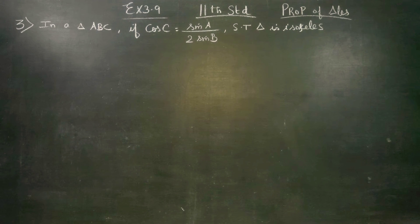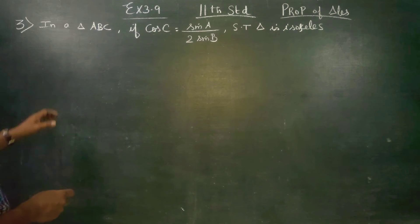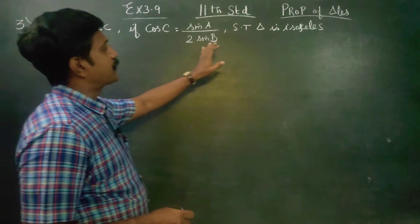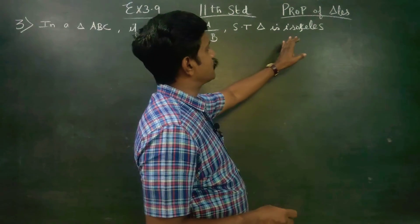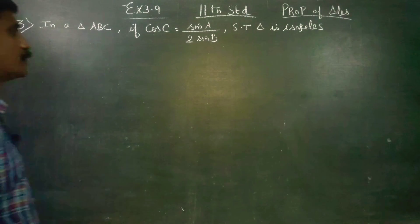Dear 11th standard students, in exercise number 3.9, we have to prove the triangle is an isosceles triangle. That is, two sides are equal to prove.